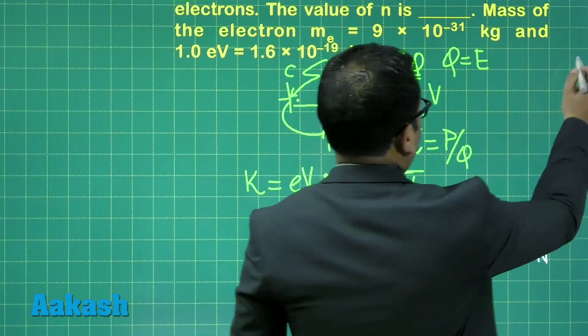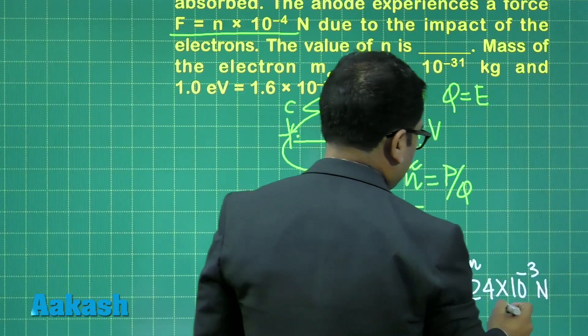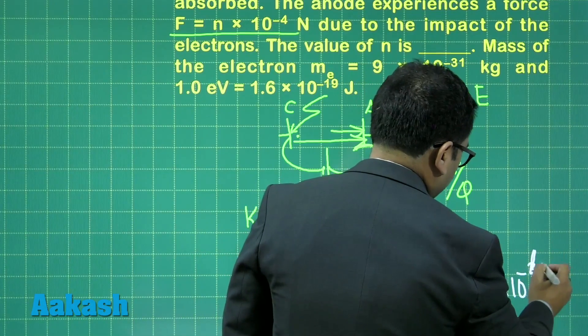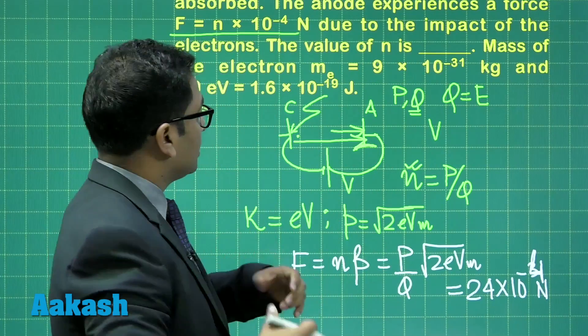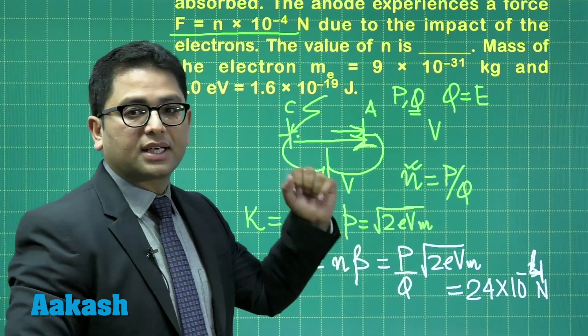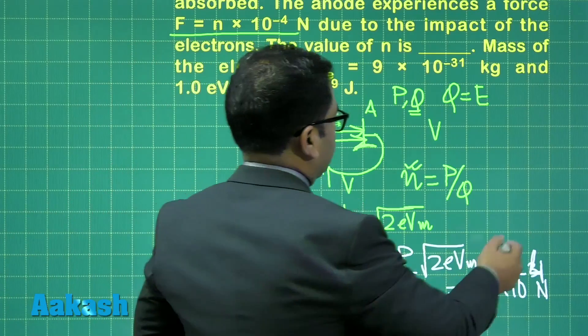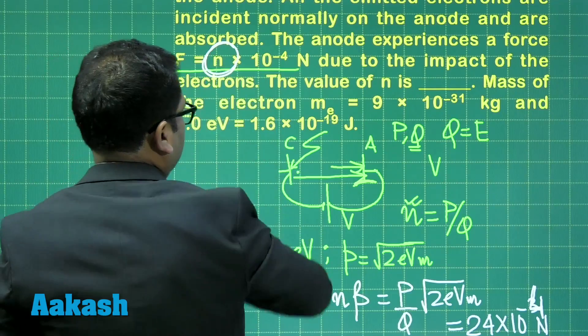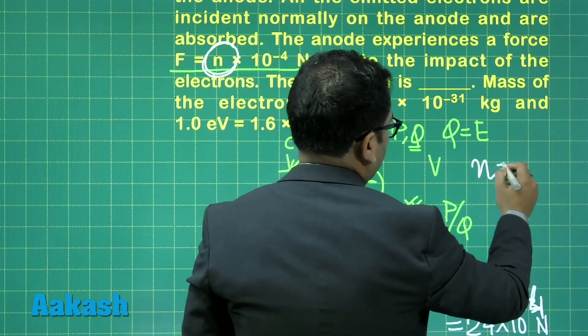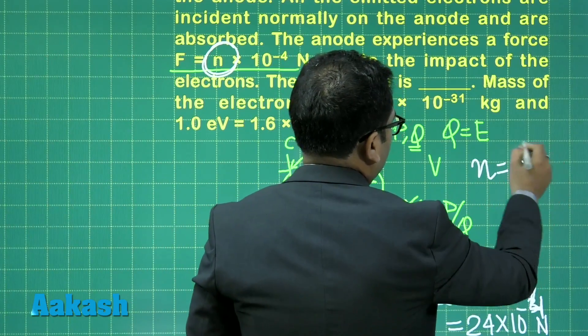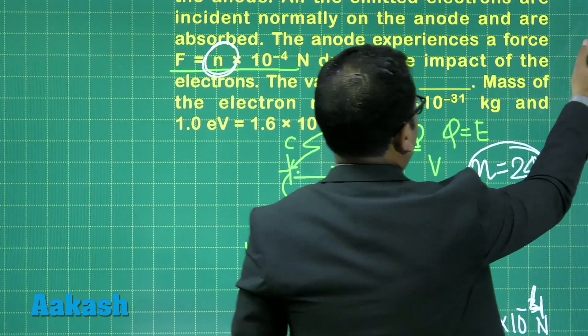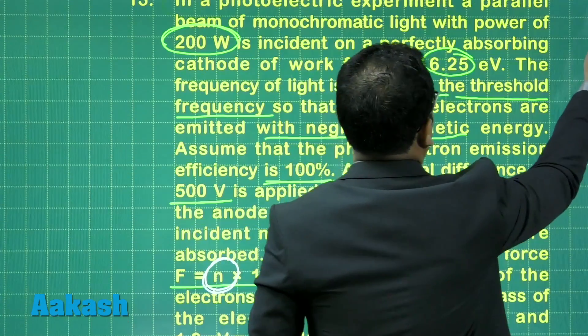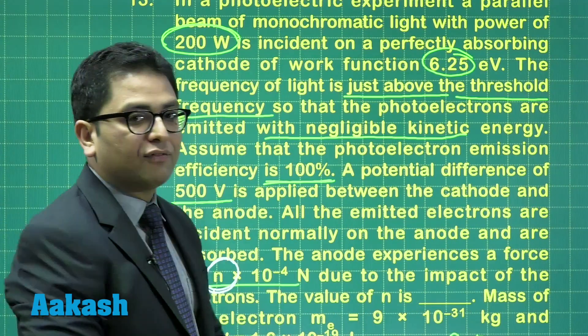this will come out to be 24 into 10 raised to the power minus 3 newton. That's the calculation which comes. And here, that is 24 into 10 raised to the power minus 4. That comes on calculation. And here we need to compare this with the given expression of force. And given expression of force here is n into 10 raised to the power minus 4. So this value of n has to be equal to 24. So 24 would be the correct answer for question number 13. And now it's time to go to question number 14, let's see.